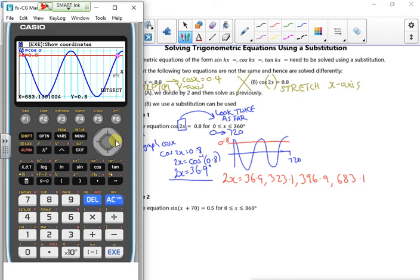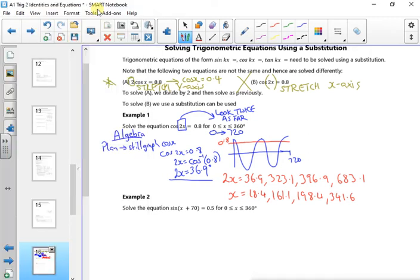Now that's for 2x because I've looked twice as far, and I've got a major twitch on about this because it's so hard to teach you this stuff. So now I half it, and that gives me about 18.4, 161.1, 198.4, and 341.6. So the reason I'm doing this way, where if it's a 2x I'll look twice as far, I get all my answers and then I half all my answers, is if it's an algebra type question. If it asks you just to do it, if it's just get on with it and do it, it's much easier.